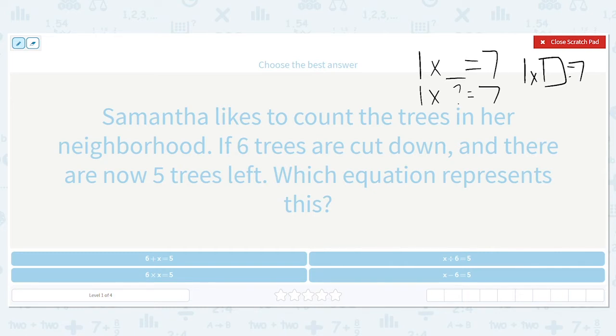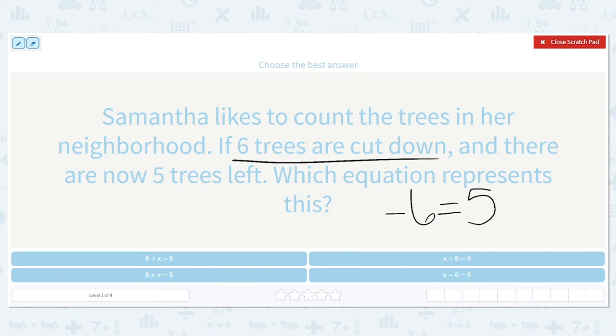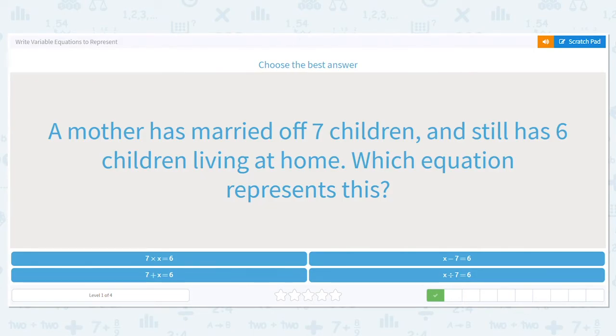So Samantha likes to count the trees in her neighborhood. If six trees are cut down and there are now five trees left, which equation represents this? Again, if there were six trees cut down, that means we're taking away six trees and now there's five trees left. I have the first part of my equation, I just don't have this, I don't know what I started with. So I put an x there. So my equation is x minus six equals five. That's the equation we're looking for. We're not actually solving the equation, we're just figuring out what equation needs to go in there.